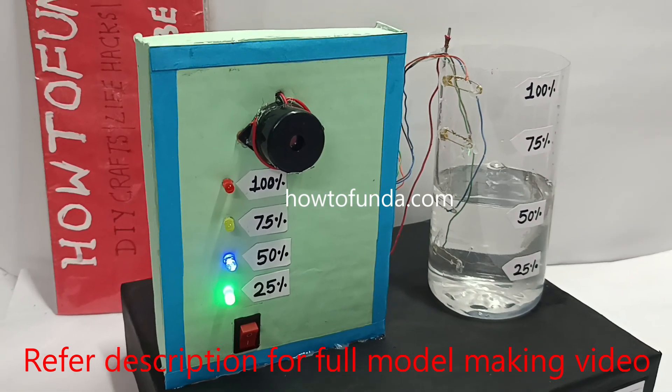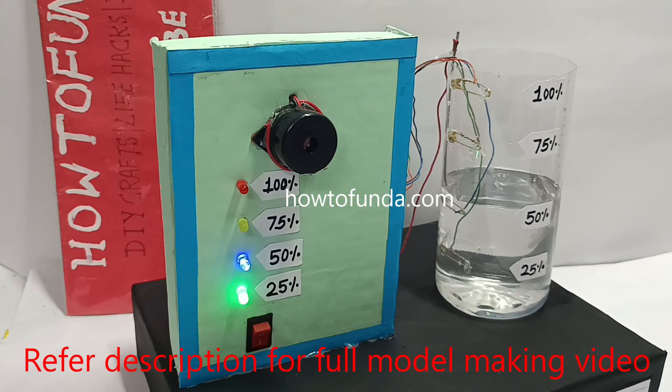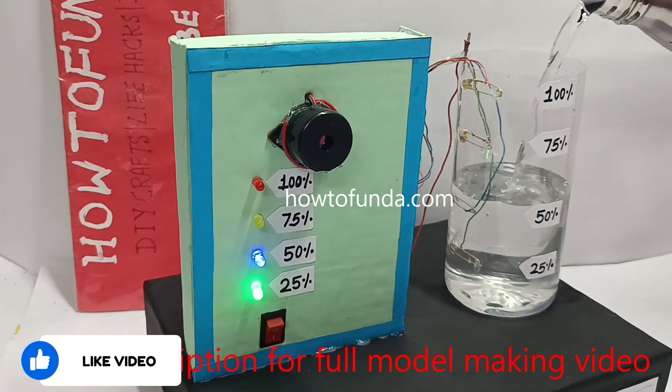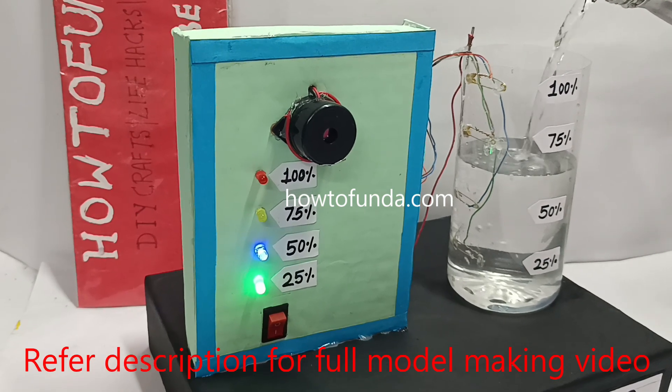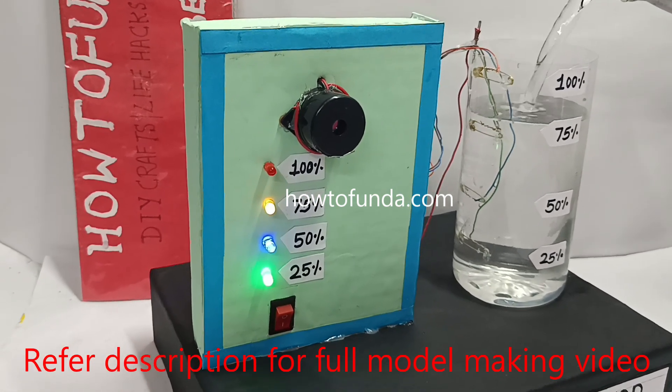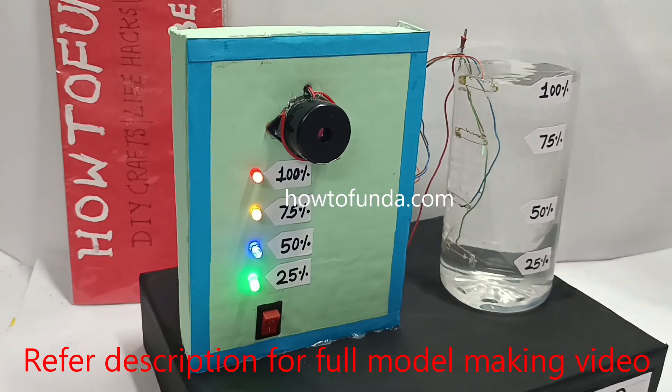We have provided options for 25 percent, 50 percent, 75 percent, and 100 percent water levels. When the water reaches each level, we can see an appropriate indication in the LEDs showing that the water is at that level.